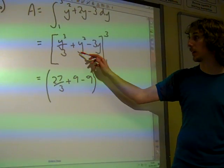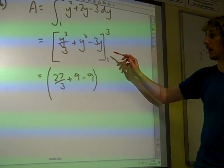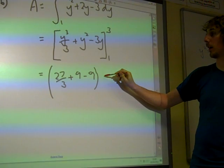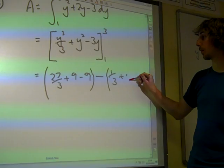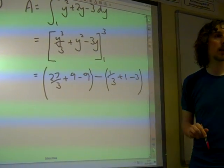3³/3 is 27/3. 3² would be 9. 3 threes is also 9. Take away what you get if you put 1 in there. That's a third plus 1 minus 3.